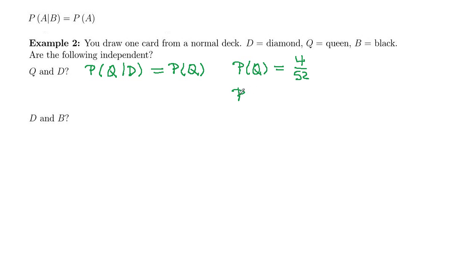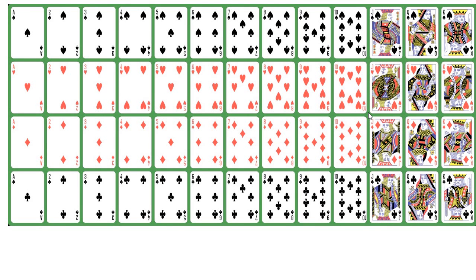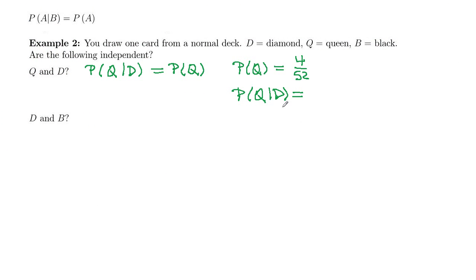Now, probability of drawing a queen given that it's a diamond. So this is saying you're only considering diamonds. You're only considering these 13 cards as your restricted total outcomes. And we want to know how many queens out of those 13 cards. There's one queen. So the given event, diamonds, determines our denominator. And then out of those 13, how many satisfy the first event? One.